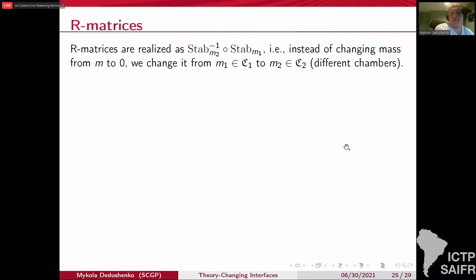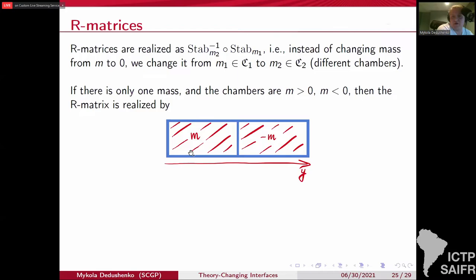Now, how do you construct R matrices? They are sort of ratios of these stable envelopes, as I already said, where you go, which basically means that you go from one value of mass to another value of mass, which corresponds to different chambers in the parameter space. In the simplest case, when there's only one mass, you can imagine the following configuration where mass is positive here, negative here. And this interface, that's what's going to realize the R matrix.